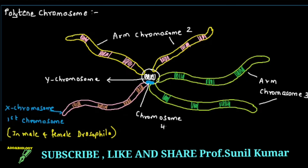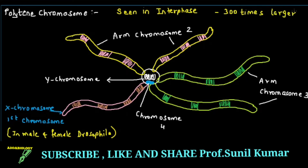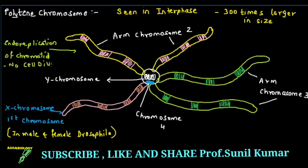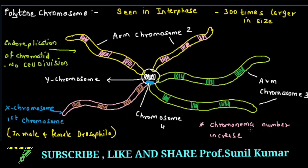There is continuous transcription taking place, no cell division, and it occurs during the interphase stage. This polytene chromosome is found in Drosophila melanogaster and in two-winged flies — dipterans. The word polytene itself means many thousands of DNA coming together. Very importantly, the chromonema number increases approximately 2000 times — that is a very important point for NEET exam.